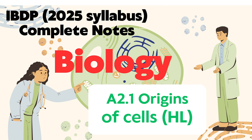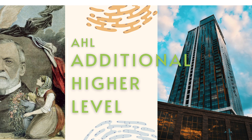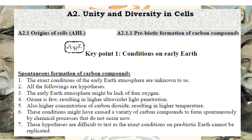So today I will go to A2 and we talk about the first concept, which is the origins of cells. Where does the cell come from? This is far, far away, so it is just theory. But you still have to remember what the current theory about it is. All these things are additional high level. If you are SL, you can take a break for this week. And now we are on A2 — A2 is about unity and diversity in cells.